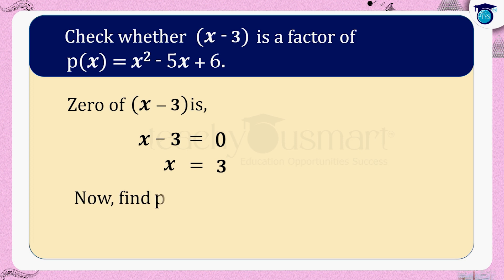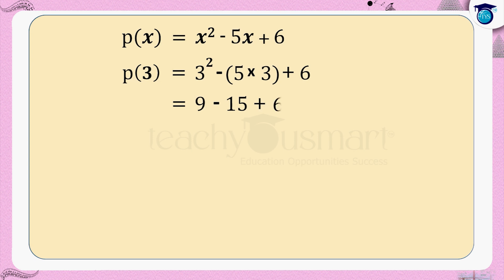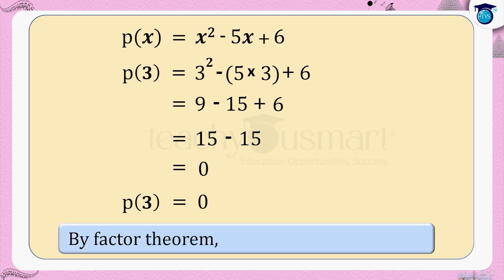Now find p(3). We have p(x) = x² − 5x + 6, so p(3) = 3² − 5 × 3 + 6 = 9 − 15 + 6 = 0. Since p(3) = 0, by the factor theorem, (x − 3) is a factor of p(x).